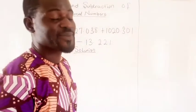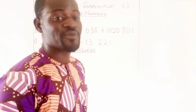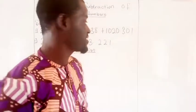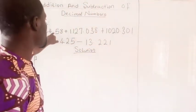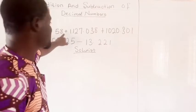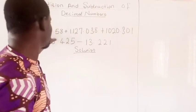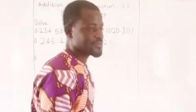What are decimal numbers? Decimal numbers are a set of numbers with a decimal point. As you can see here, we have 234.58. This decimal point makes this number a decimal number.